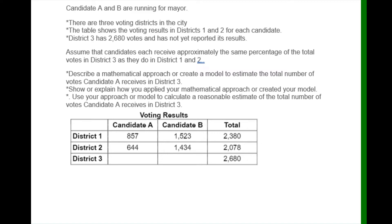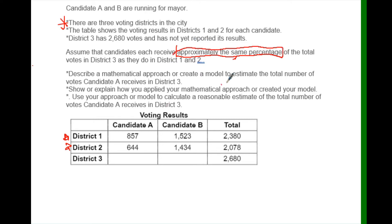For this question, you want to make sure you answer all parts. There are three voting districts in a city. The table shows the voting results for districts 1 and 2. District 3 has 2,680 votes and has not yet reported results. Assume that the candidates each received approximately the same percentage of the total votes in district 3 as they did in districts 1 and 2.